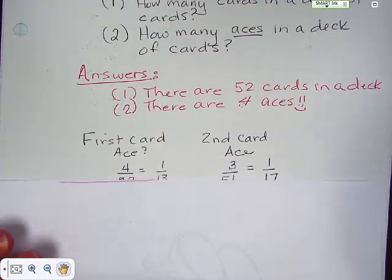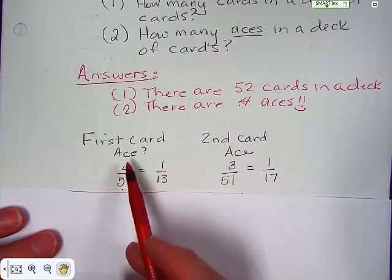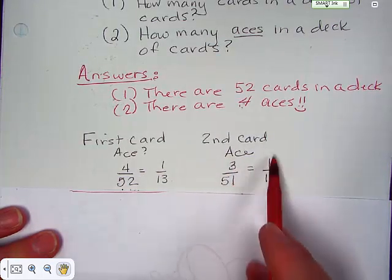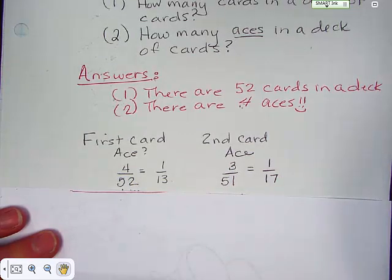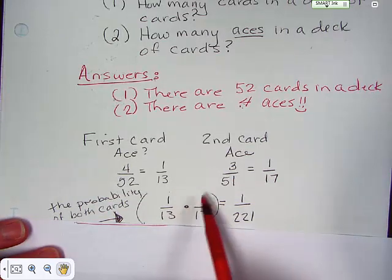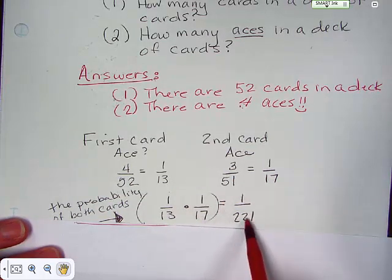So, theoretically, that's how it works. So here you go. Four out of 52 does reduce to 1/13. Three out of 51 reduces to 1/17. So, to figure out probability, we have to go down here and multiply. One over 13 times one over 17 equals one over 221.